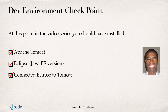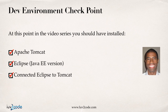Alright, so before we start coding, let's just perform a development environment checkpoint. At this point in the video series, you should have installed Apache Tomcat, Eclipse — the Java EE version — and you also should have connected Eclipse to Tomcat. If you haven't done this yet, please go back to the previous videos and follow those steps. You'll need to have all of this in place before you can actually build the Hello World program.